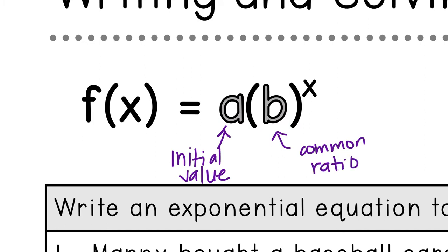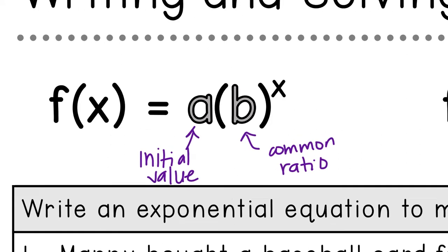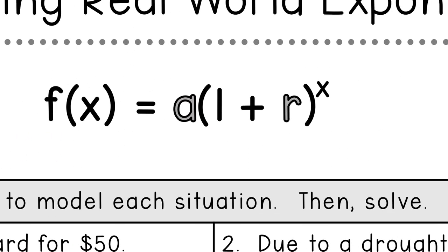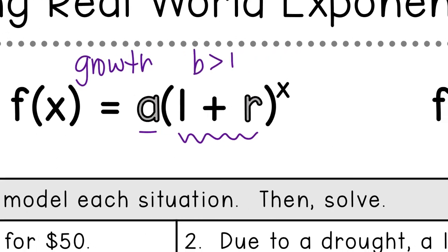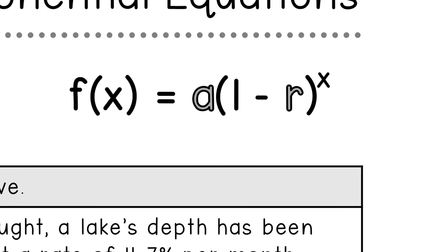With word problems it's a little bit different because they're going to give you a rate or a percent. For exponential growth, a is still the same but instead of b you're going to have one plus r, because when it's growth b has to be greater than one. When it's decay, b has to be less than one, so we would subtract our rate.